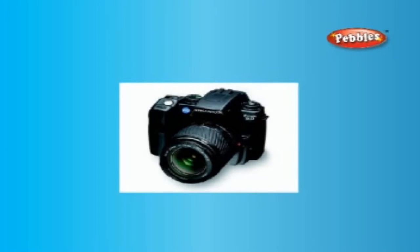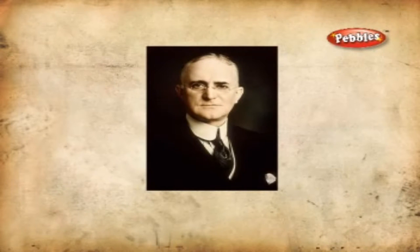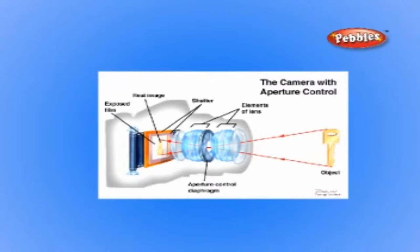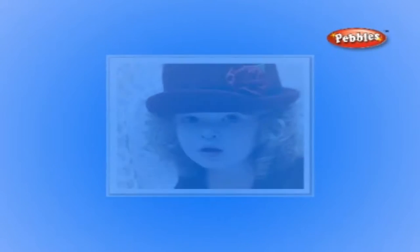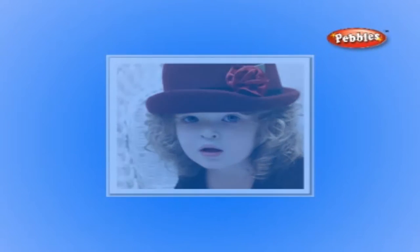The camera was invented by George Eastman in the year 1888. A camera is a device used to take pictures, usually photographs, either in single or in sequence, with or without sound recording. A camera that takes pictures in single is sometimes called a photo camera to distinguish it from a video camera.